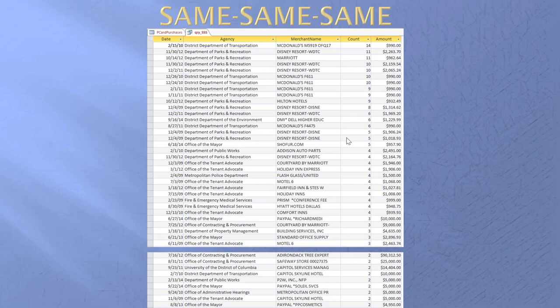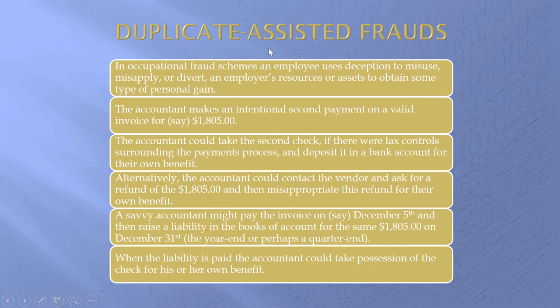Duplicate-assisted frauds. In short, what somebody in the accounting department does — maybe the controller, maybe the CFO, or maybe simply a payments person with some authority — is they make an intentional second payment of, say, $1,805. They then go and ask the vendor for a refund of the overpayment, which was supposedly an error, and then they divert that refund for their own use.